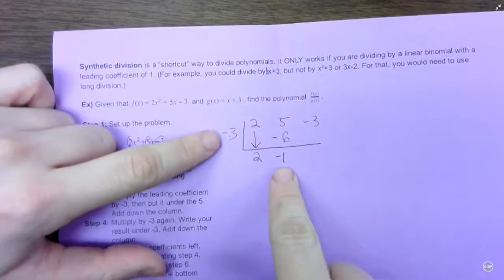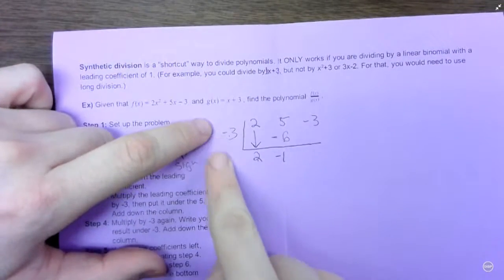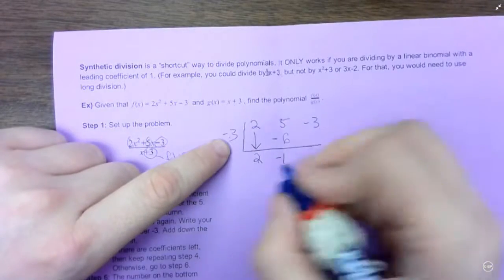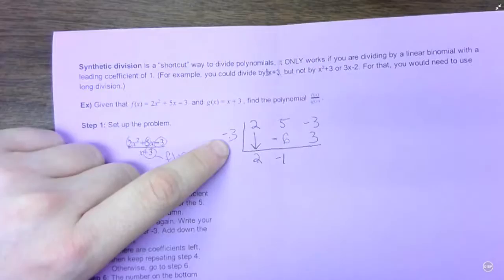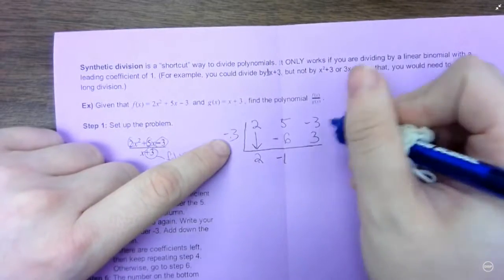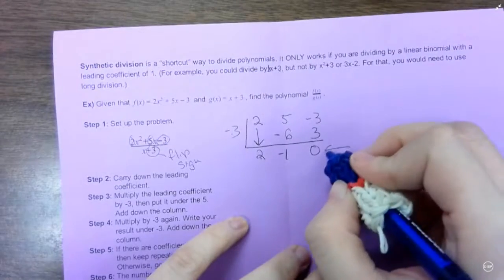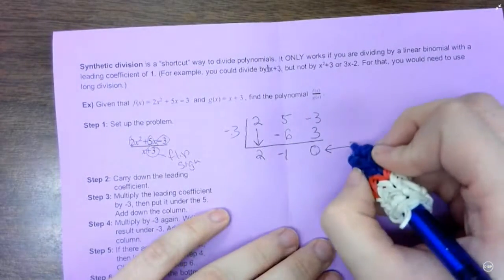And then again, this is what I just brought down, or wrote down. So I'm going to multiply it by negative 3. Negative 3 times negative 1 is 3. I write my product right here in the next spot. Add down, negative 3 plus 3 is 0. So by the way, this last spot, once you're done dividing, is your remainder.